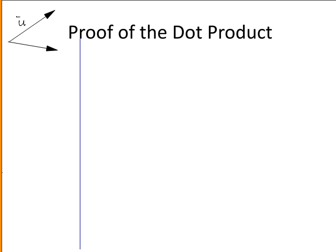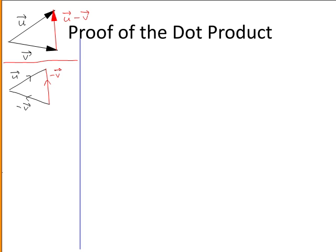If this is the vector u and this is the vector v, then this is the vector u minus the vector v. To see where this came from: this is the vector u, this is the vector minus v, going in the opposite direction to vector v. You can use the triangle law to add these two vectors, which gives this vector as the result. So this is minus the vector v plus the vector u, using the triangle law, which can be rewritten as the vector u minus the vector v.